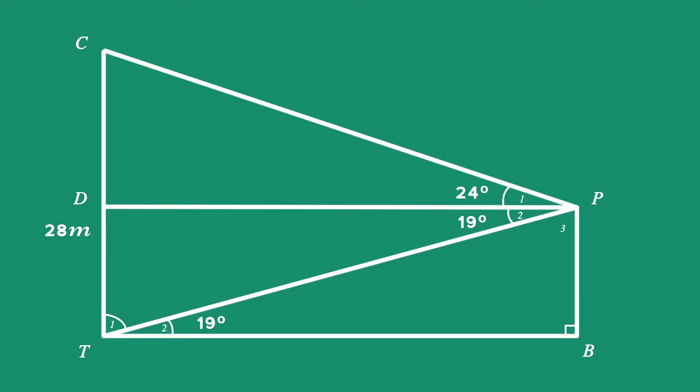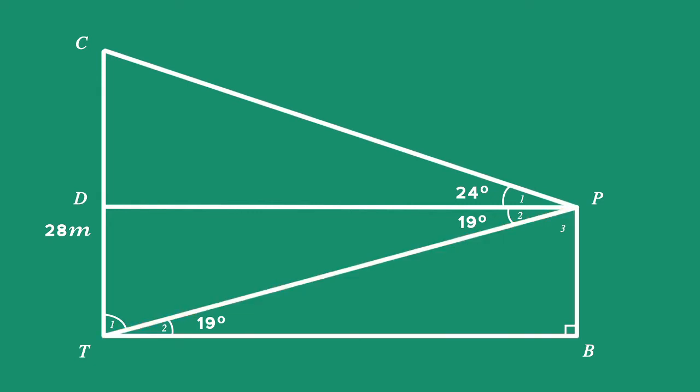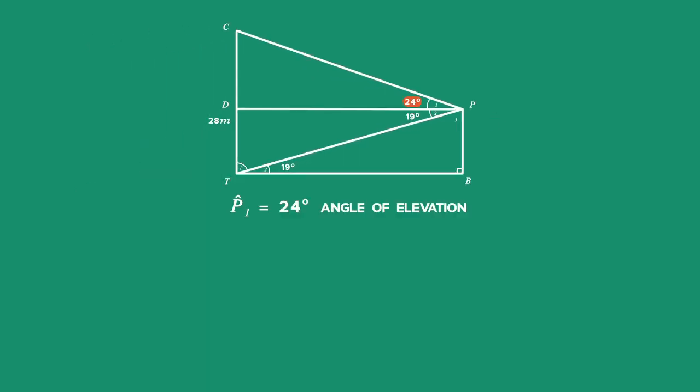We need to find a side that links triangle PBT to triangles with known lengths, so we need to find PT first. We are given that angle P1, the angle of elevation, is 24 degrees.